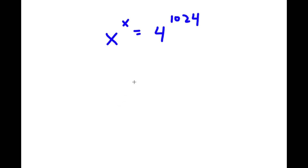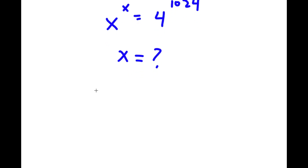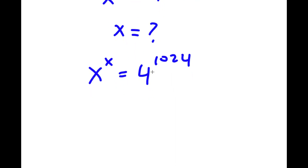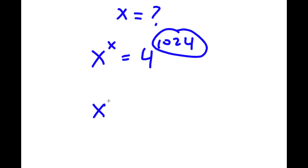In this problem, I have x to the power of x is equal to 4 to the power of 1024. To solve this, I first start with x to the power of x is equal to 4 to the power of 1024, and now I'm going to rewrite 1024 as 4 times 256.